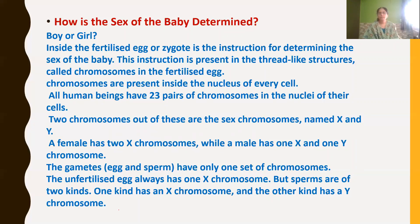In the chapter on cell structure and function, we learned about the structure of the nucleus. Inside the nucleus, there is a thread-like structure called chromatin reticulum — a network-like structure. During cell division, this thickens to become chromosomes. All human beings have 23 pairs of chromosomes in the nuclei of our cells. Out of these 23 pairs, only one pair — two chromosomes — are called sex chromosomes.